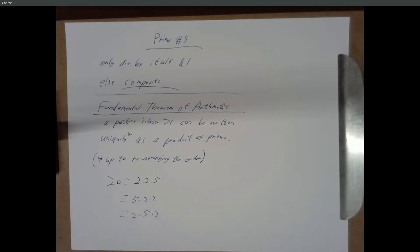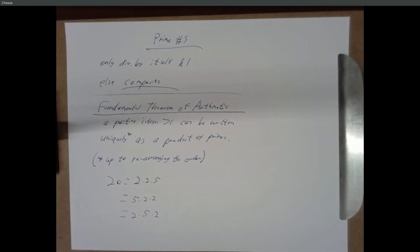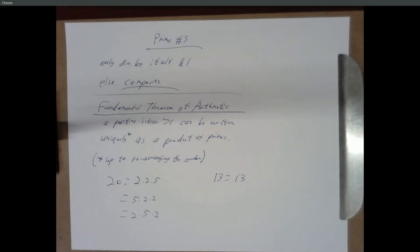We could also write it as 5 × 2 × 2 or 2 × 5 × 2, but those are just rearrangements — we don't consider those different. The theorem is telling us we can't write 20 as, say, 7 times 3. If you ignore the order, you can write a number as a product of primes in exactly one way. That's the fundamental theorem of arithmetic.